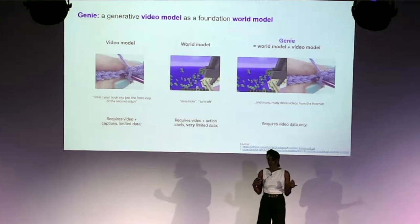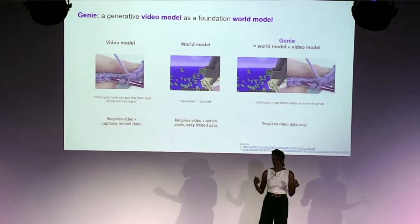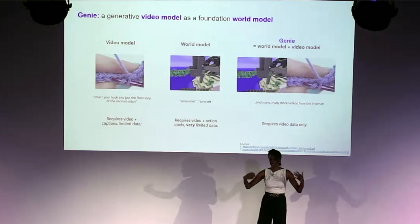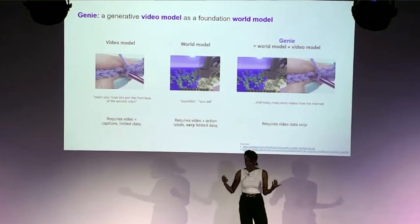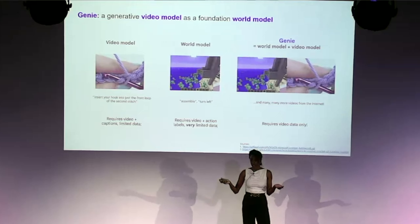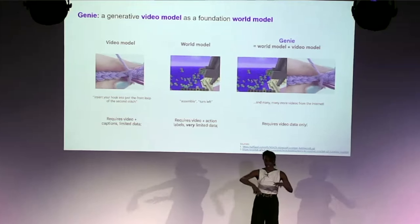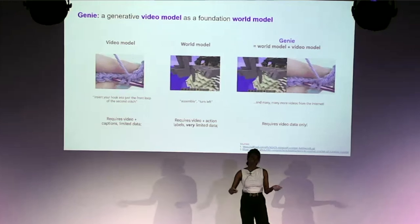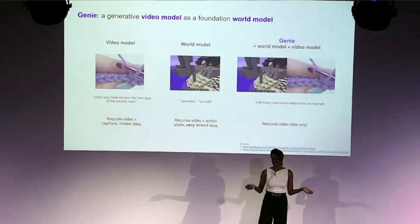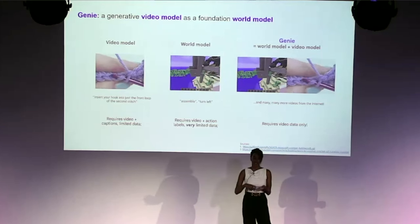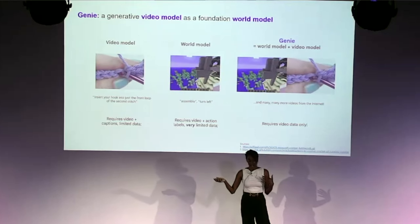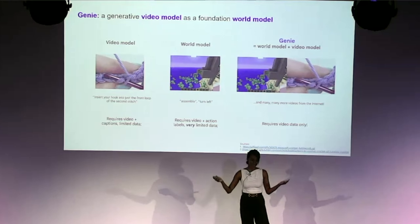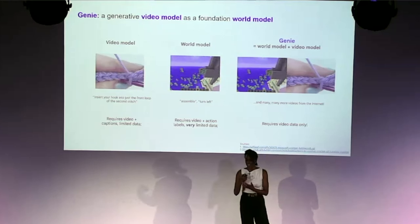You could try conditioning a video model on text actions like 'move left' or 'move right,' but you don't have that kind of paired training data — you'd need videos paired with captions describing each action, which is very difficult to obtain. World models do give you controllability — given a state, you take an action and get the next state — but they typically require videos paired with actions, which again is hard to scale. We don't have enough labeled environments for training generalist agents.